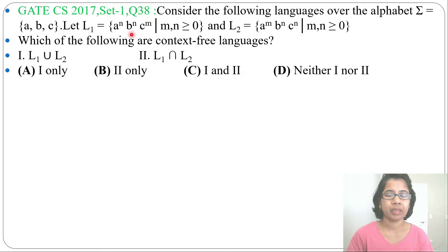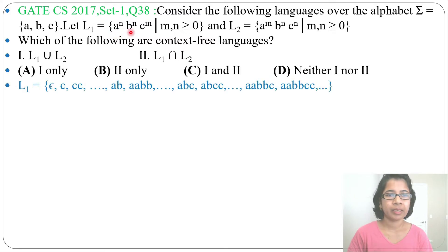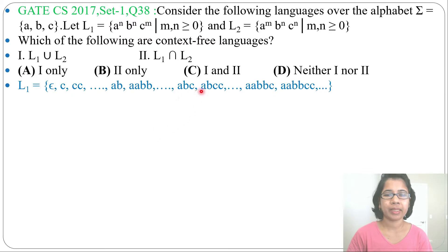Let's analyze each language one by one. First, L1 — which strings will it accept? It will accept epsilon, then C, CC, any number of C's when N = 0, so simply Cᴹ. Then it can accept AB, ABB — equal number of A's followed by equal number of B's when M = 0. Then it can accept ABC, AABBC, AABBCC — 2A followed by 2B followed by 2C, and so on. So L1 accepts equal number of A's followed by equal number of B's followed by any number of C's.